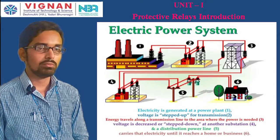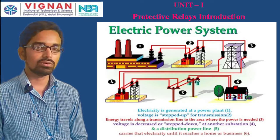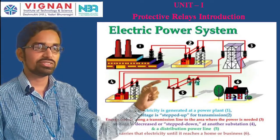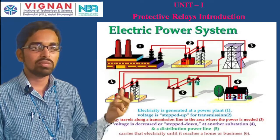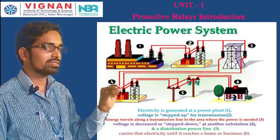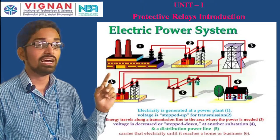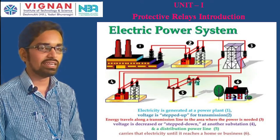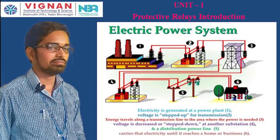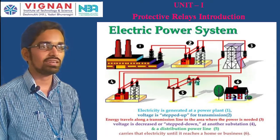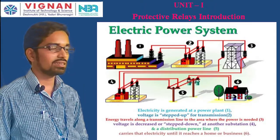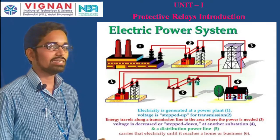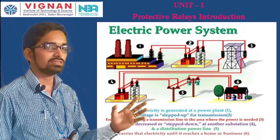The protection system costs only about 5% of the total equipment cost. For example, a generator may cost crores of rupees; by investing just 5% of that cost we can protect it. At the generator the most severe fault is an LG (line-to-ground) fault, whereas in the transmission system the most severe fault is a symmetrical three-phase fault.